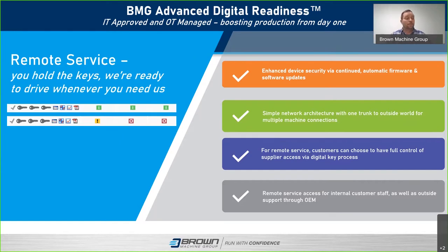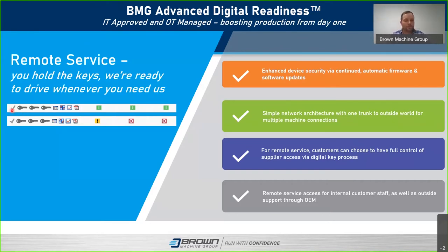Remote access is available for internal customers as well as support through OEM or third party. We have three keys shown — when a key is activated, it turns red, and a green check mark appears. If you hover over the key, it shows who is using it. The key is the access point controlling who enters the machine and who does not.